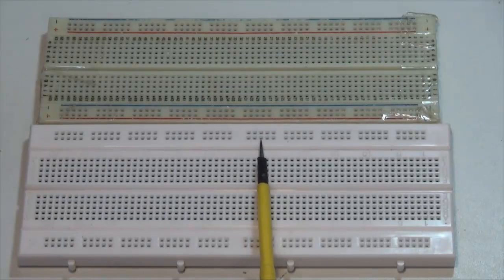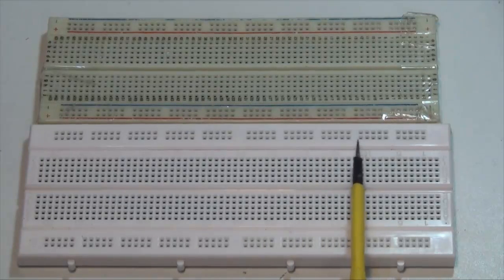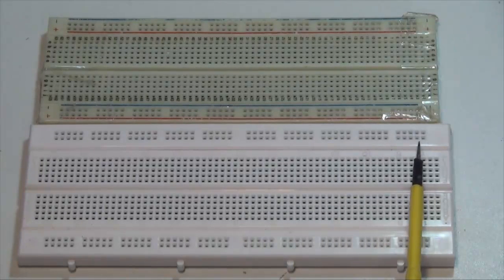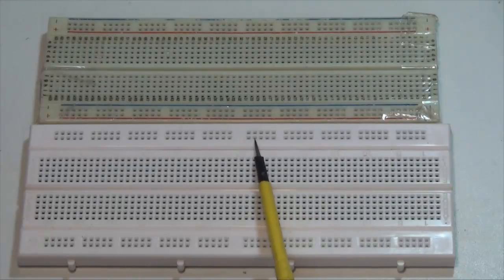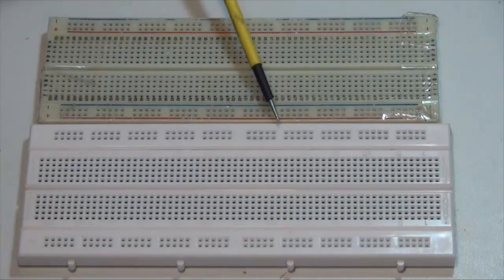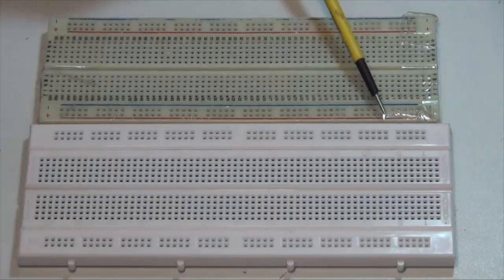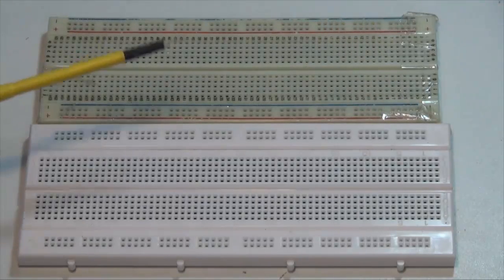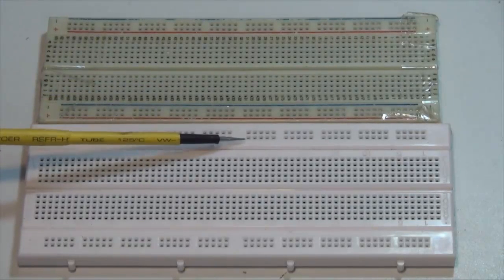But yet, all these five groups of five are all connected together here, and this group of five groups of five are connected together, but not connected between these two rows.